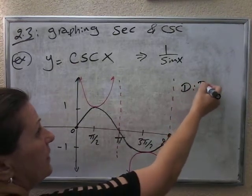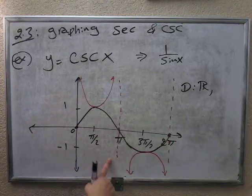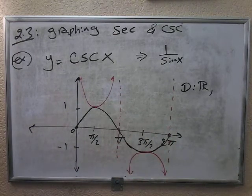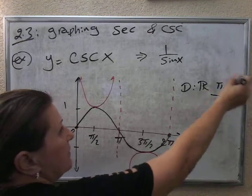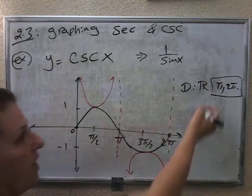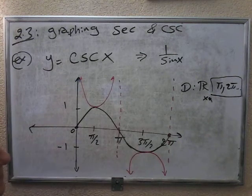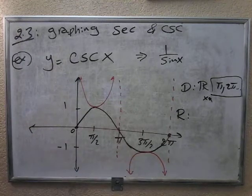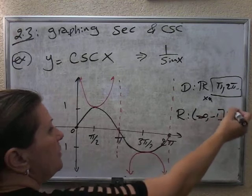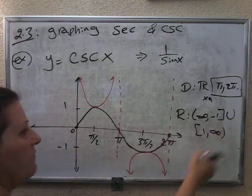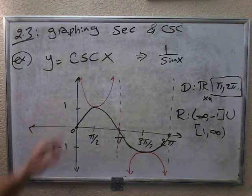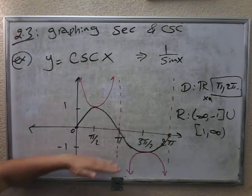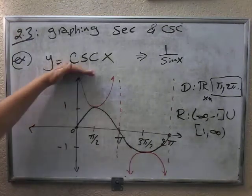The domain of this function is all real, except at pi, then plus whatever multiples of pi — so at pi, 2 pi, and continuing like that; x cannot equal those values. For the range: from negative infinity to negative 1, bracket, union, 1 to positive infinity — same as secant. Because there was no shifting of the graph up, down, right, or left, that's your basic graph.